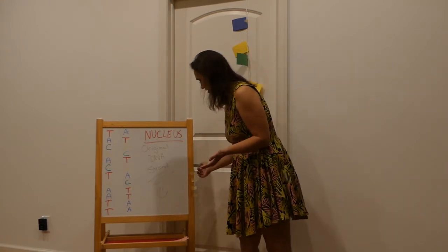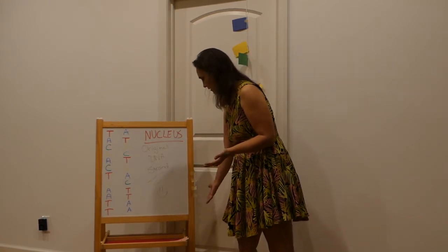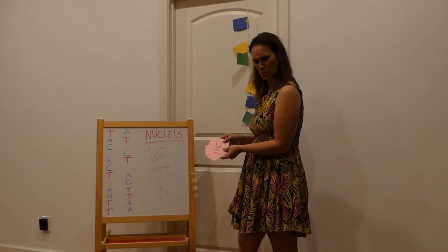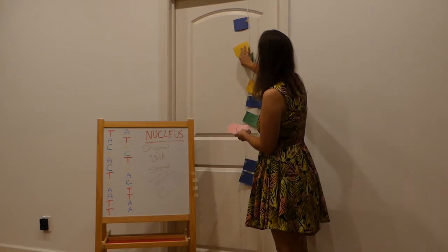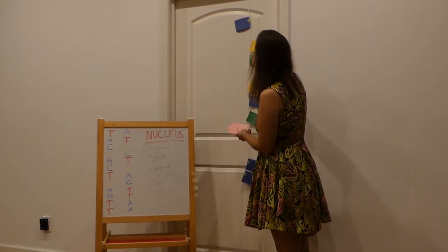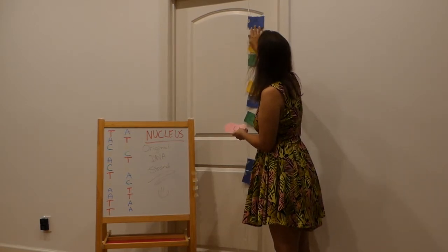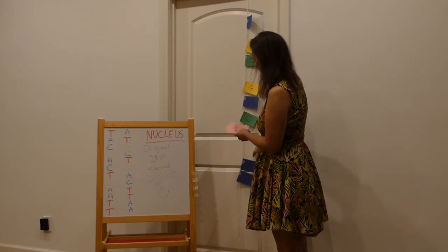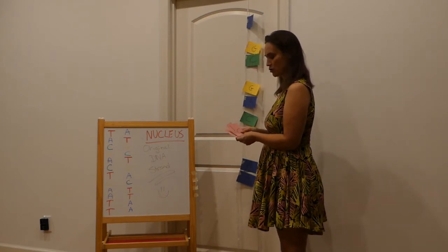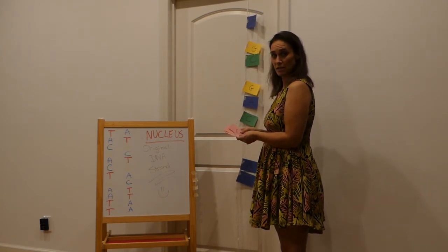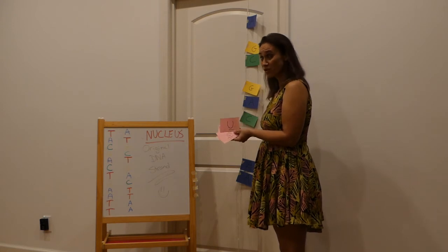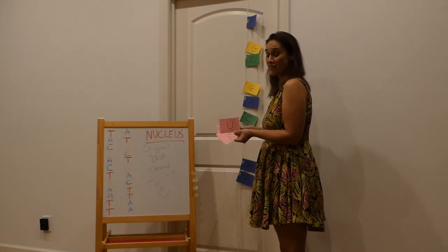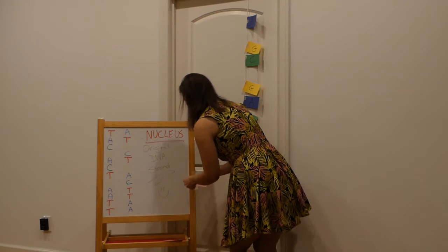All I have left are four pieces of tape and four U's. And I've got one, two, three, four gaps on my strand. Maybe I'm supposed to just put these U's there instead of T's — that's all I have. Okay, we'll try it and see what happens.